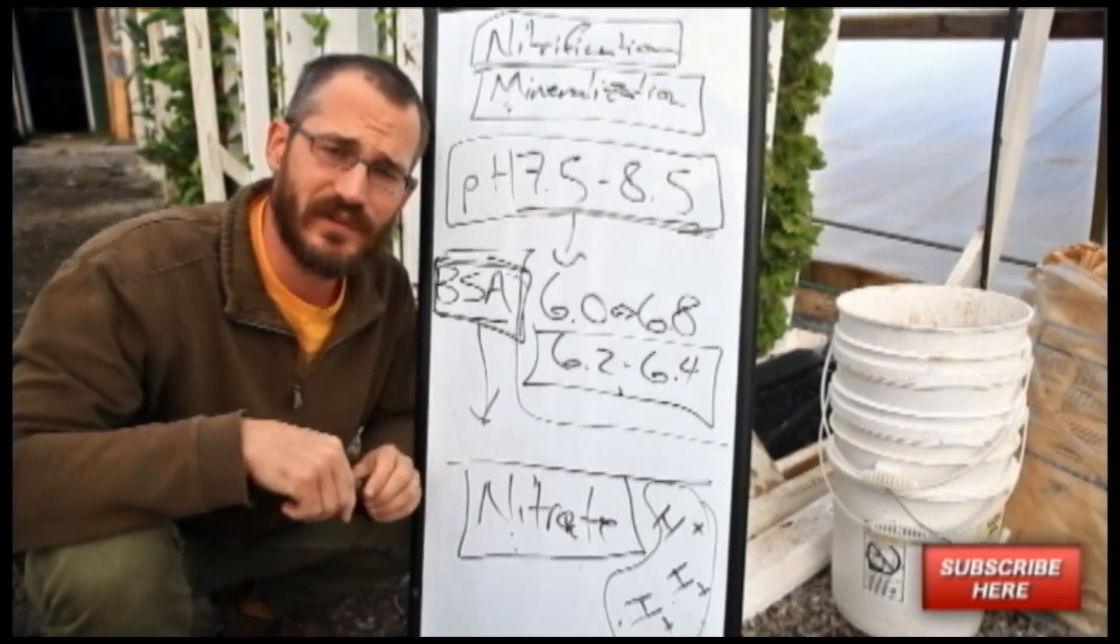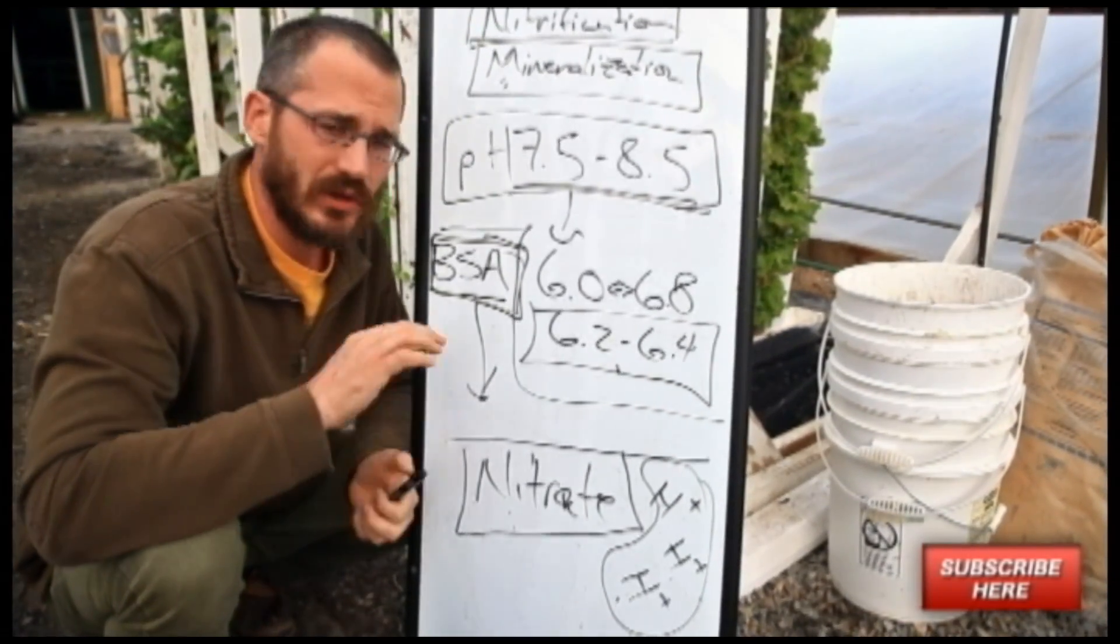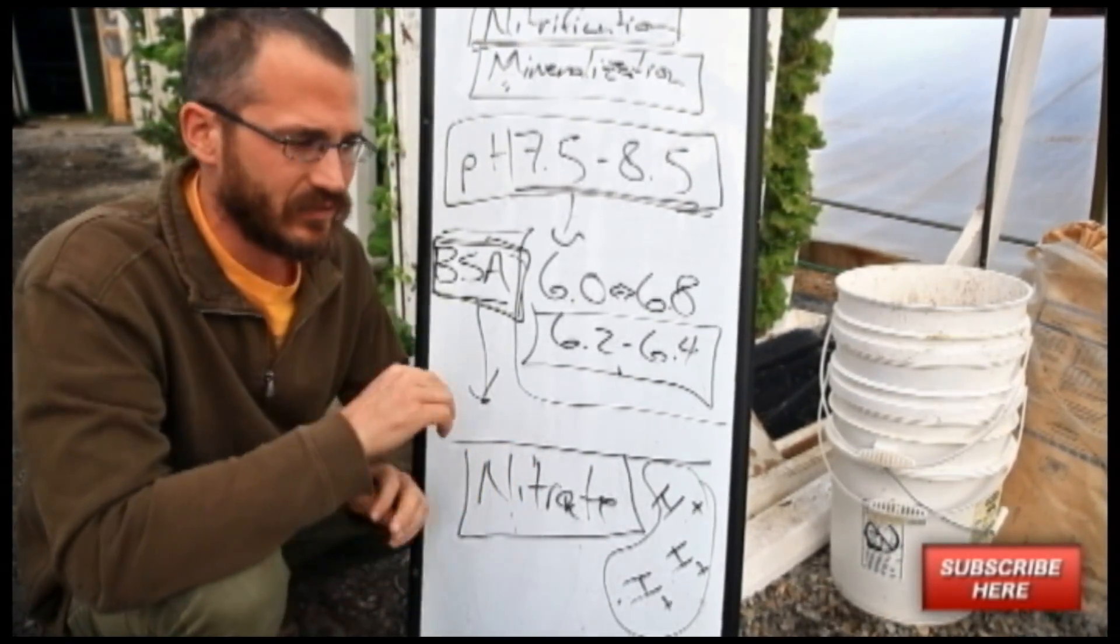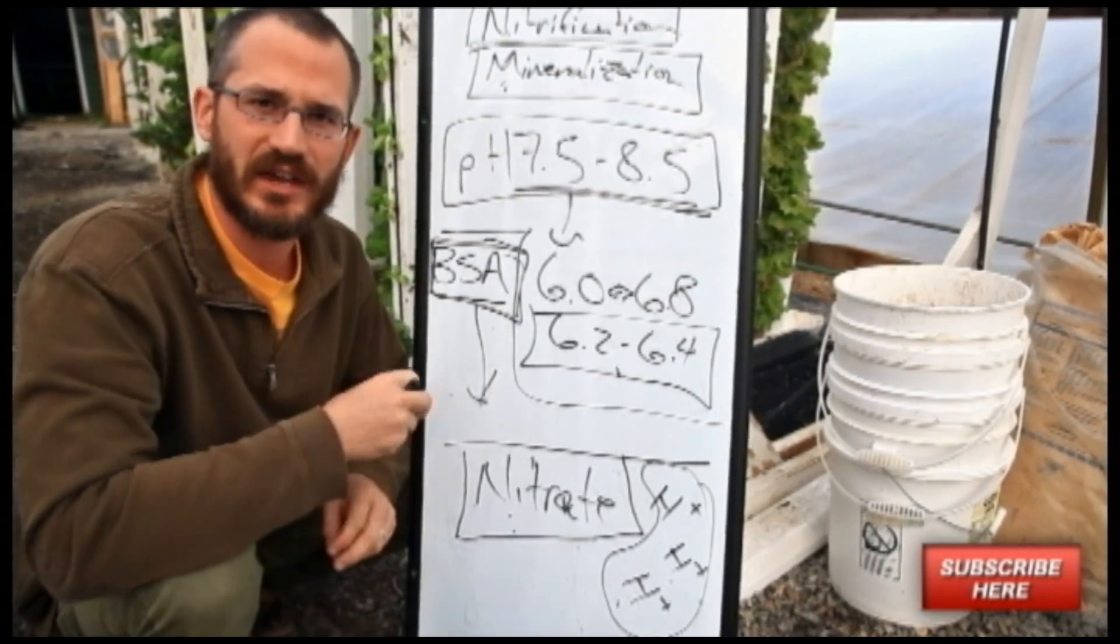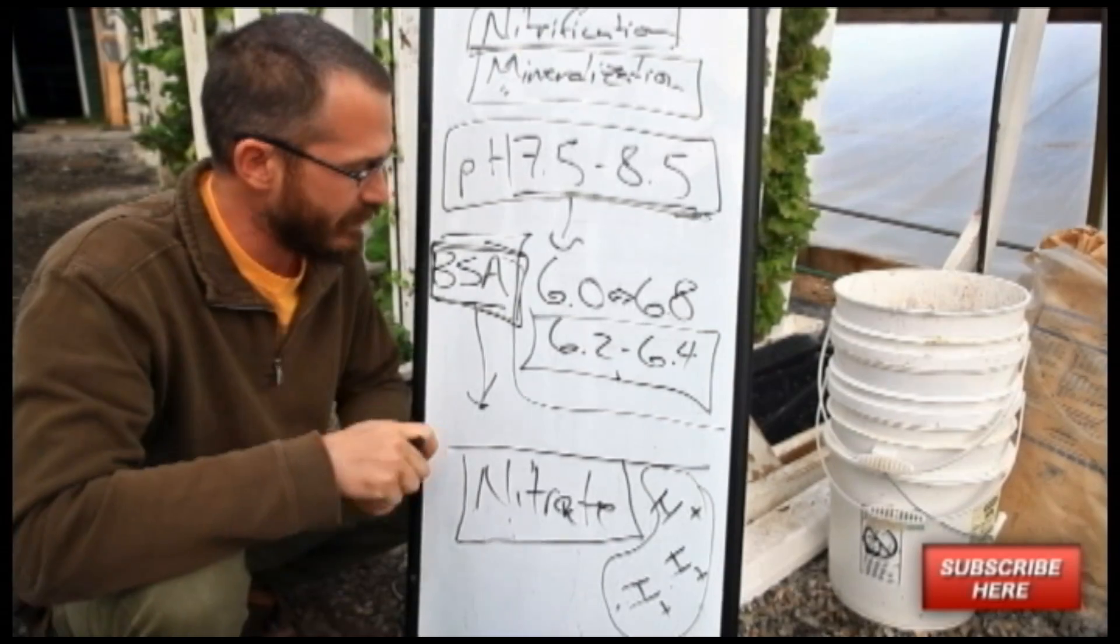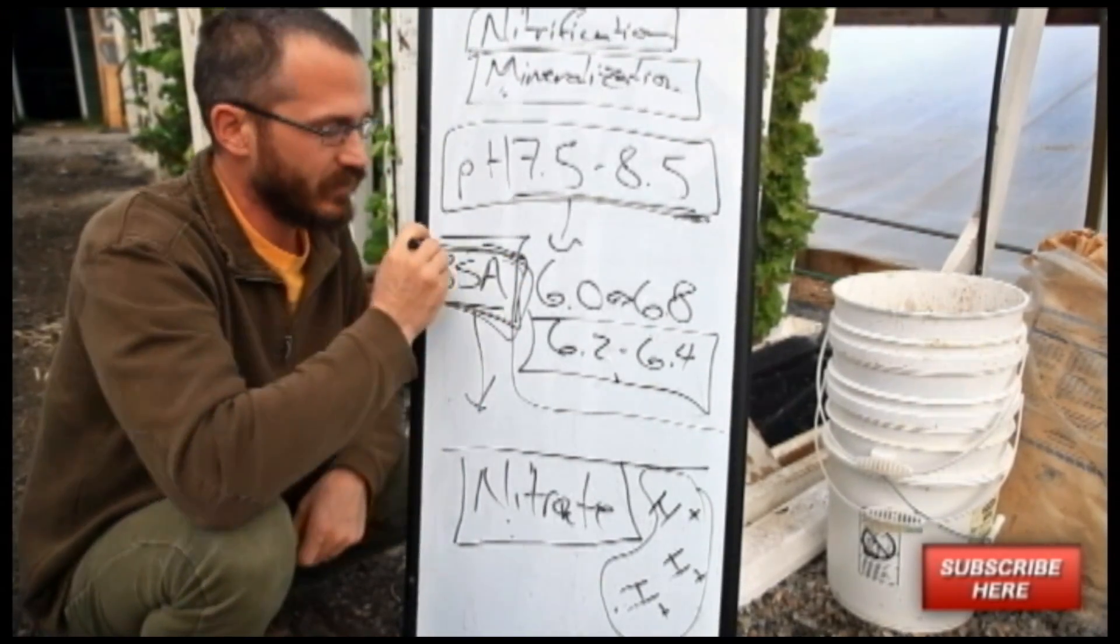Once you have a really healthy nitrifying bacteria colony, you'll be able to feed at absolutely stupendous rates and get great, great, great nitrification almost immediately. If you have lots of BSA and your colonies are very healthy